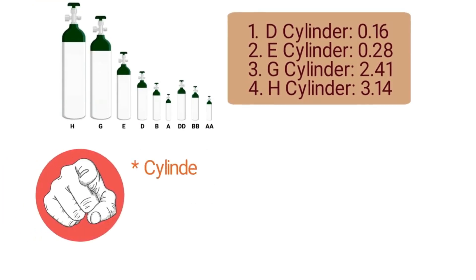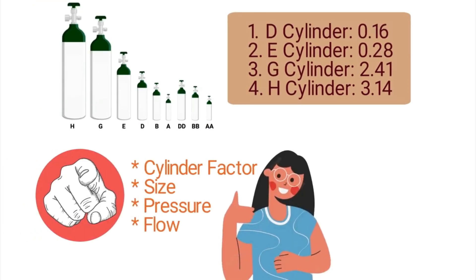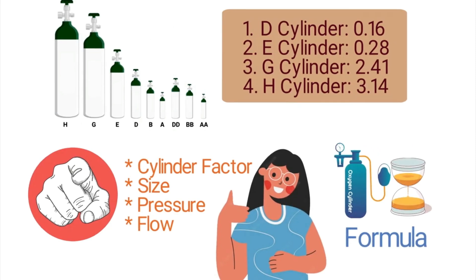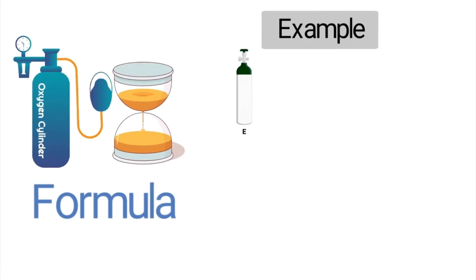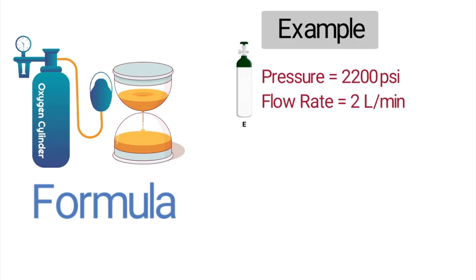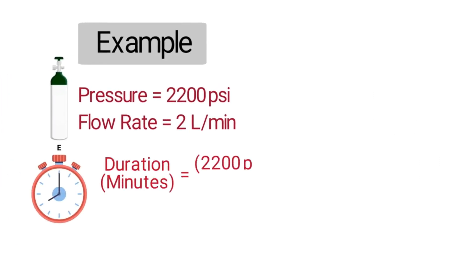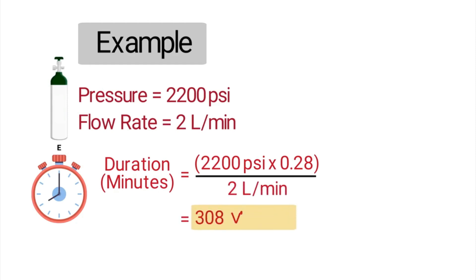If you know the cylinder factor, size, pressure, and flow, you can easily plug the numbers into the formula to calculate how long the tank will continue to deliver oxygen. For example, let's say you have an E cylinder with a pressure of 2200 and a flow rate of 2 liters per minute. The duration in minutes is equal to 2200 times the cylinder factor — which for an E cylinder is 0.28 — then divide that by the gas flow of 2 liters per minute. This equals 308 minutes.